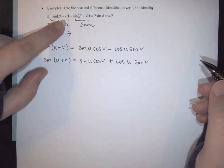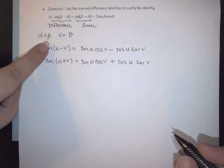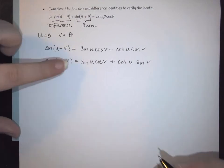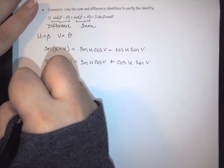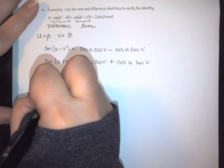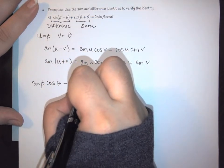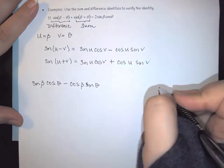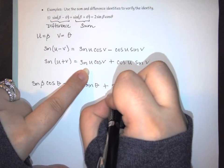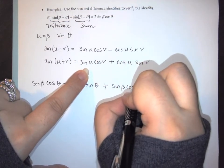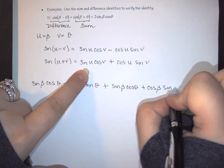Now I want to plug these identities into my problem. Starting with the difference, remembering my u is beta and my v is theta, this becomes sine(beta)cos(theta) minus cos(beta)sin(theta). Adding this to the sum expansion, I get sine(beta)cos(theta) plus cos(beta)sin(theta). My hope is that this will end up equaling two sine of beta cosine theta.